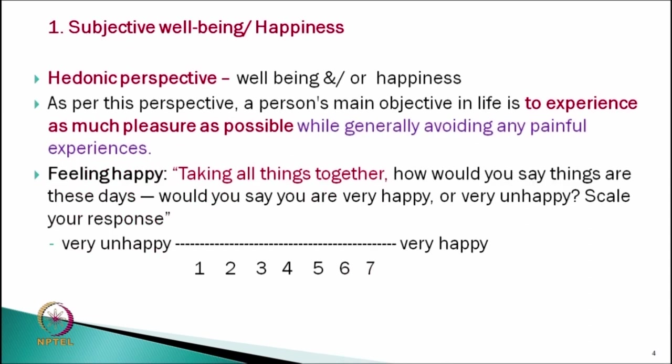So, various scholars have various definitions and various ways of assessing or measuring someone's happiness. Let us know one by one all theories, how they define happiness and ways of measuring it. In this series, the first model is subjective well-being — the hedonic perspective of well-being or happiness.